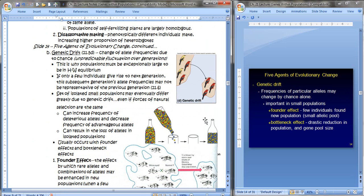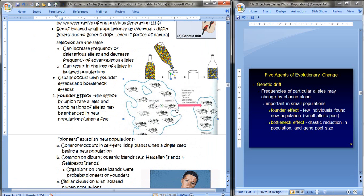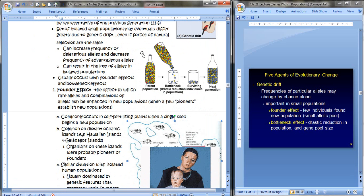The fourth agent of change is genetic drift. Genetic drift is where you have a change in allele frequencies due to chance, and this is going to result in unpredictable fluctuations over time. And this has a very amplified effect in small populations. This is why populations must be exceptionally large to be in Hardy-Weinberg equilibrium. For example, if only a few individuals gave rise to the next generation, the subsequent generations' allele frequencies may not actually represent the population from which their parents came, even if the forces of natural selection are the same.